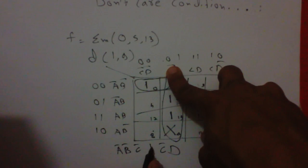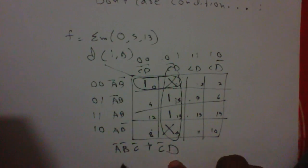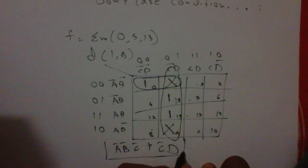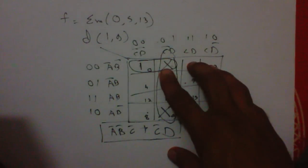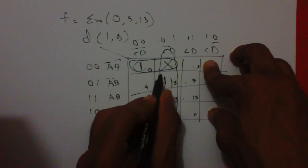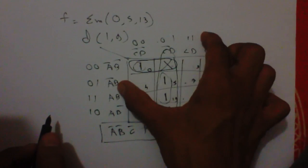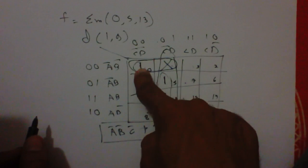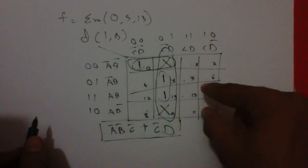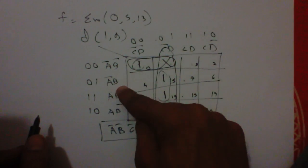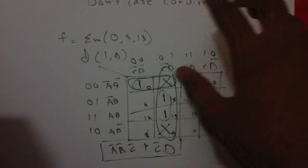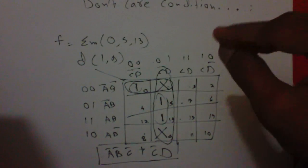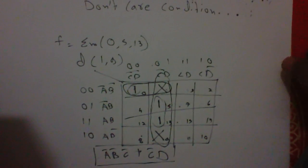C bar plus C bar D. So this is the equation of this condition. If there were no don't care condition, then our group will be only one and this, so the expression will be longer. For this it will be A bar B bar C bar D bar, and for this B C bar D. So it is good to use don't care condition in grouping to reduce the Boolean equation.